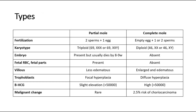There are two main types of hydatidiform mole, which are the partial mole and complete mole. I've listed the differences here. In partial mole, there will be fertilization between two sperms and one egg, whereas in complete mole, the egg is empty plus one or two sperms.